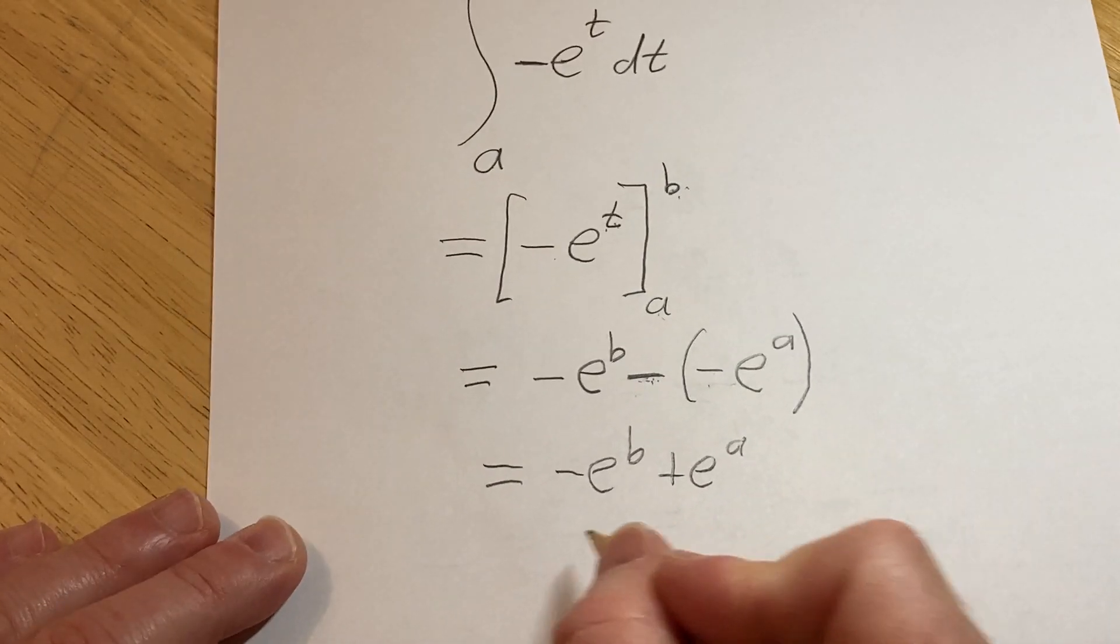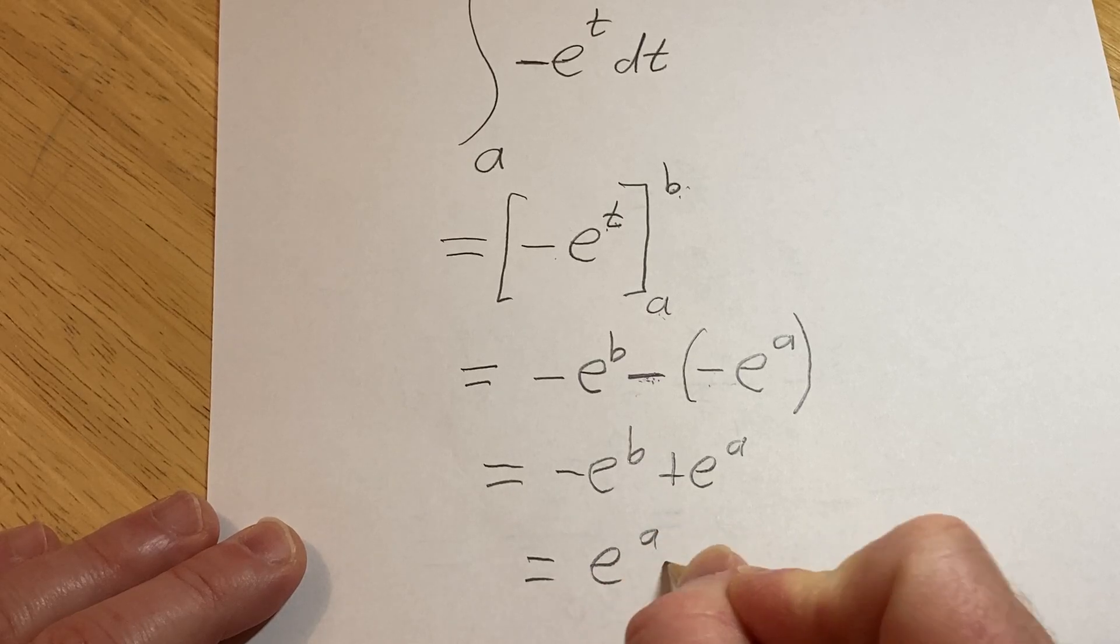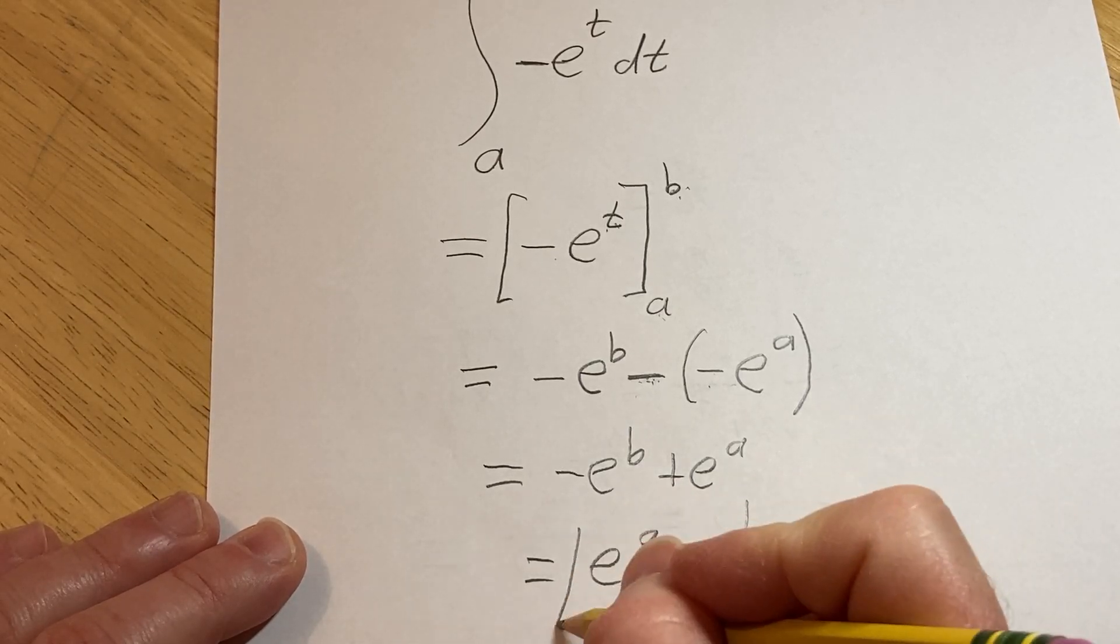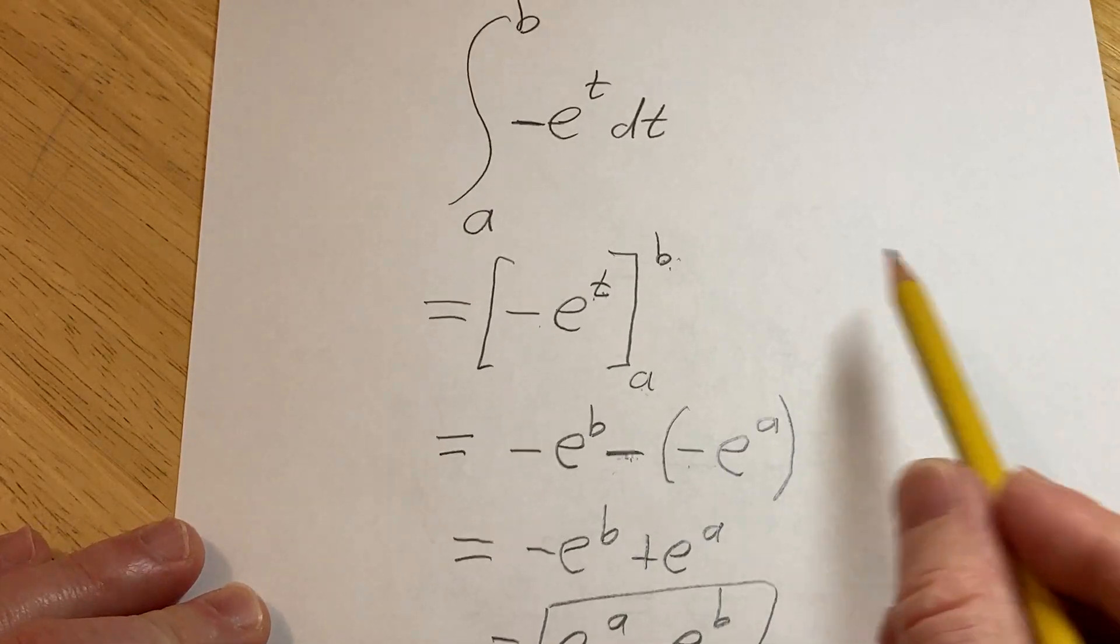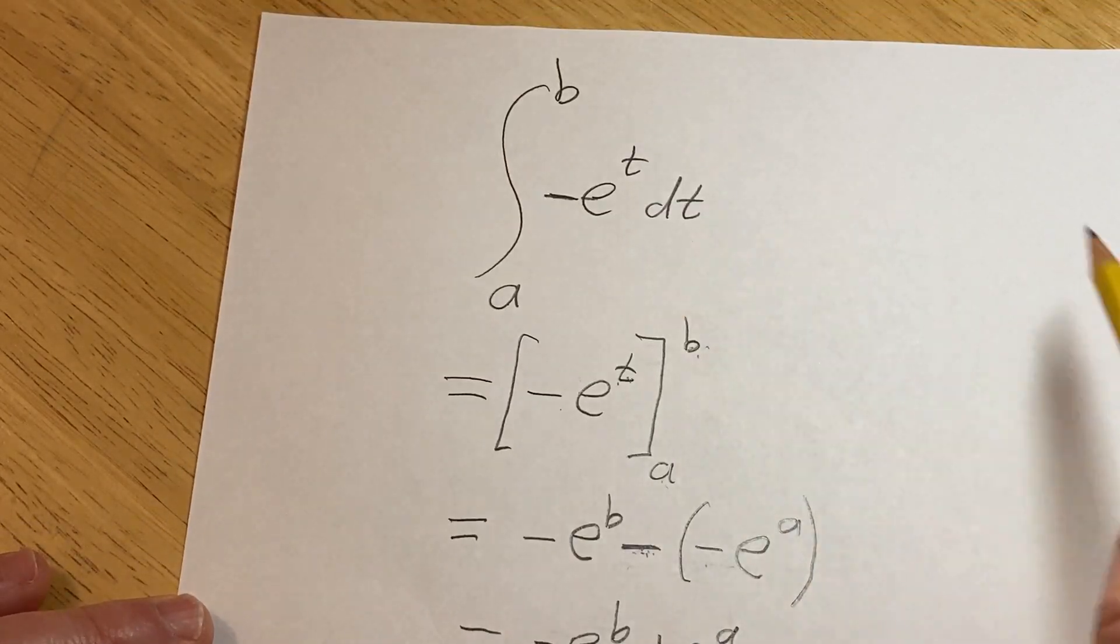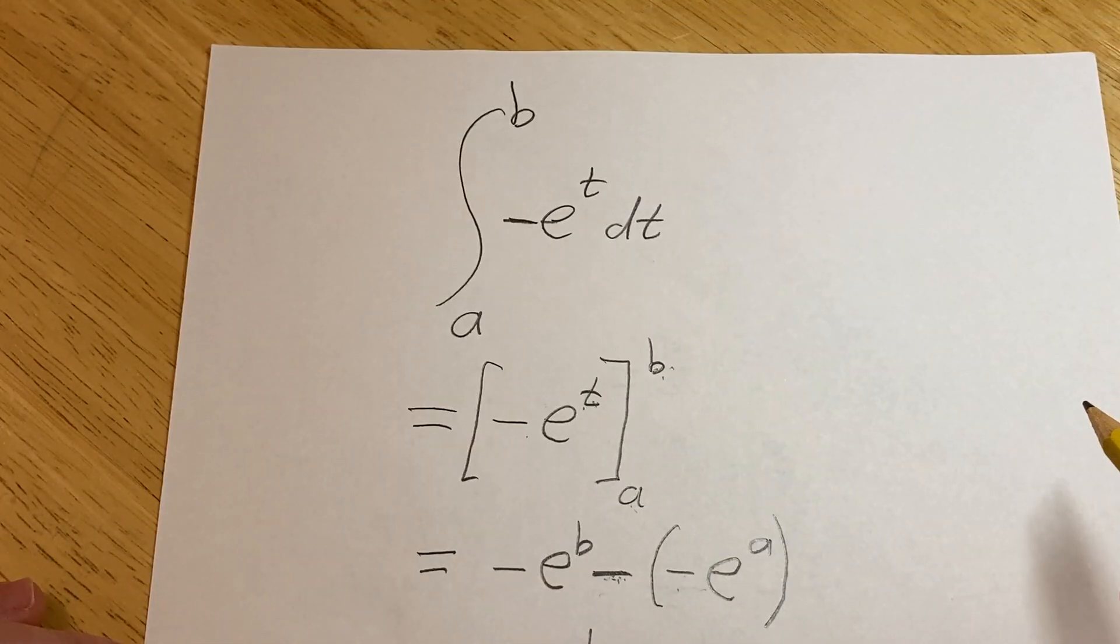So this is going to be equal to e to the a minus e to the b. And that would be the value of this definite integral. Pretty cool, right? Pretty interesting.